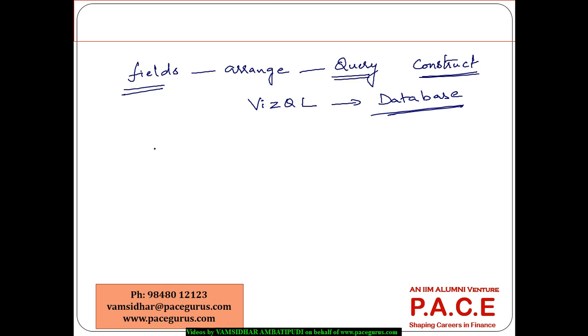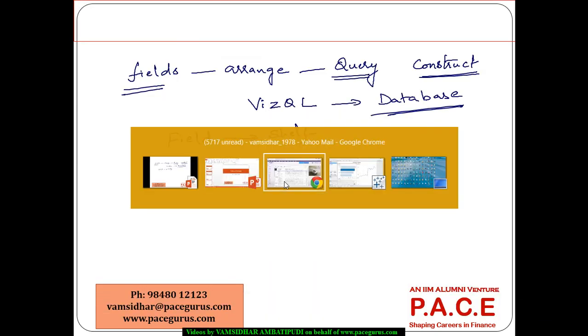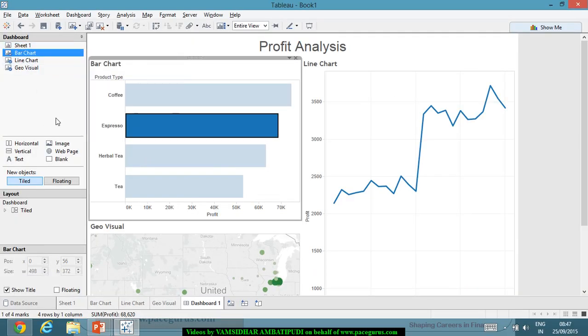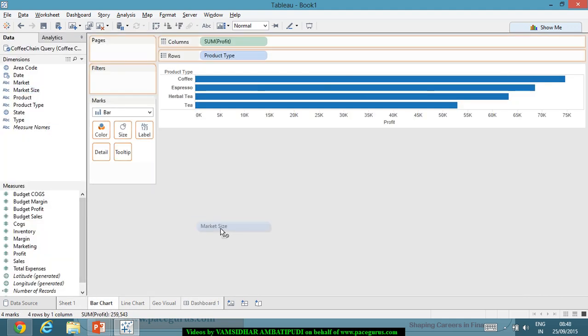Typically when we have seen we are dragging and dropping a field, almost all the times we have dragged and dropped the field onto the shelf. Let me just showcase. So I have dragged one field onto the shelf like this. When I have dragged it, that action, there is a VizQL query that is generated for that action.